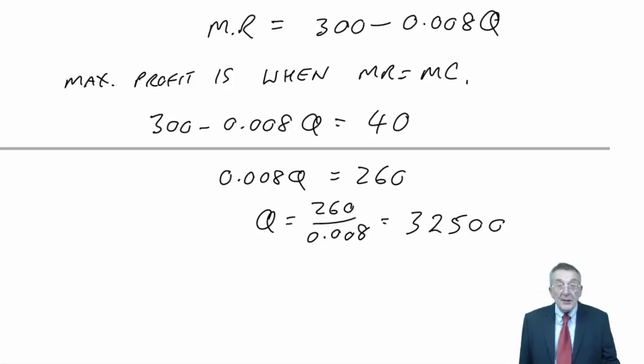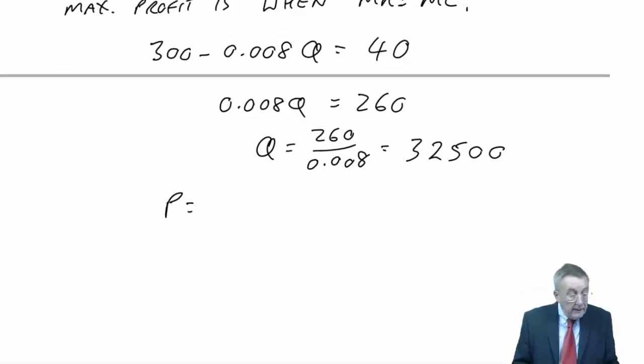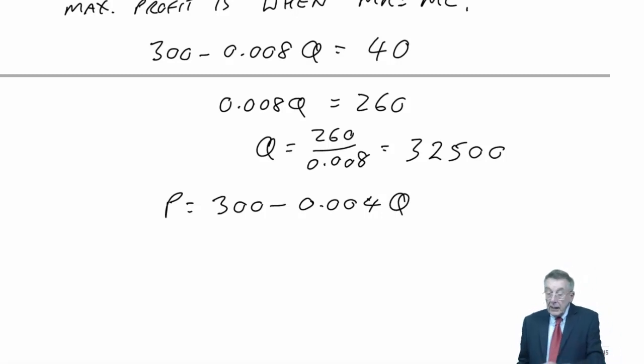it wants to know what the selling price should be. And of course, we can have any demand we like depending on the selling price we fixed. But it's now easy. We know, do we not, from the question that the price is going to be 300 minus 0.004Q.